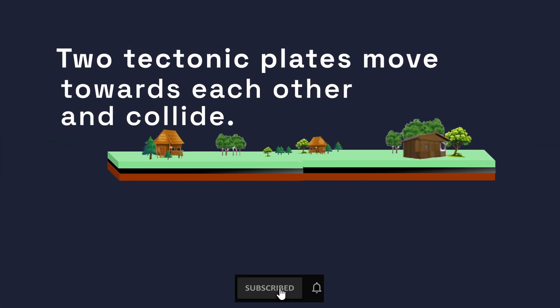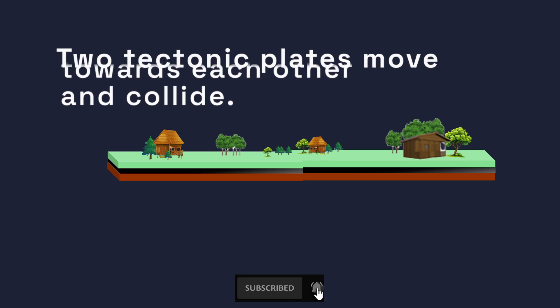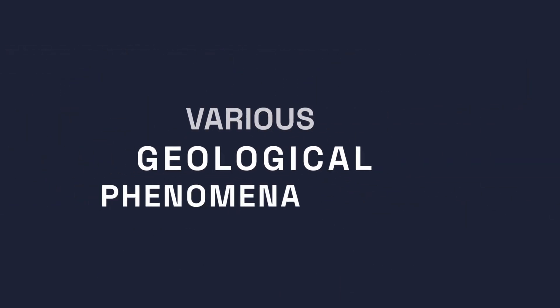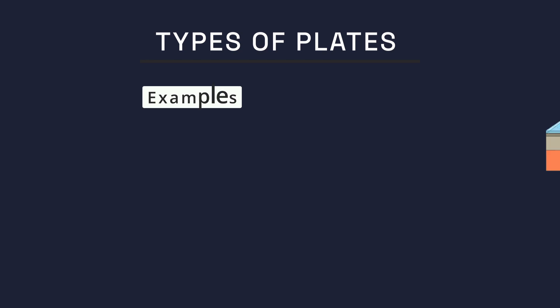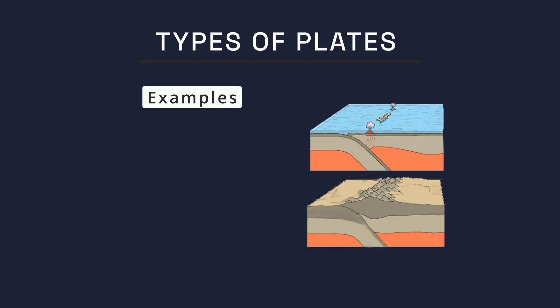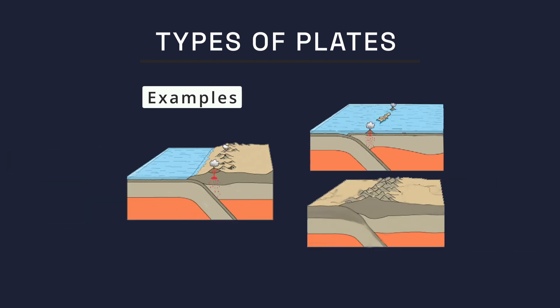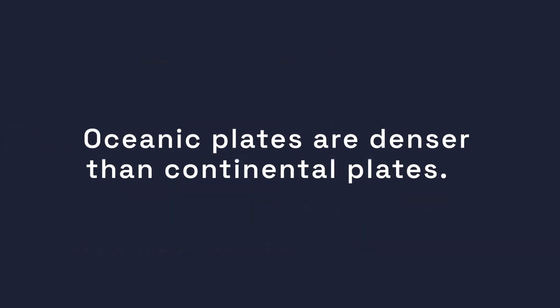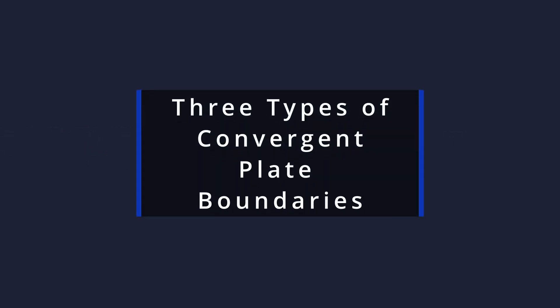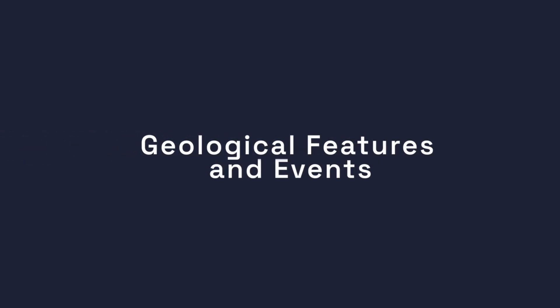Convergent plate boundaries occur where two tectonic plates move towards each other and collide. This collision can result in various geological phenomena depending on the types of plates involved — for example, oceanic, continental, or a combination — and their relative densities. We know that oceanic plates are denser than continental plates. There are three types of convergent plate boundaries, each associated with distinct geological features and events.